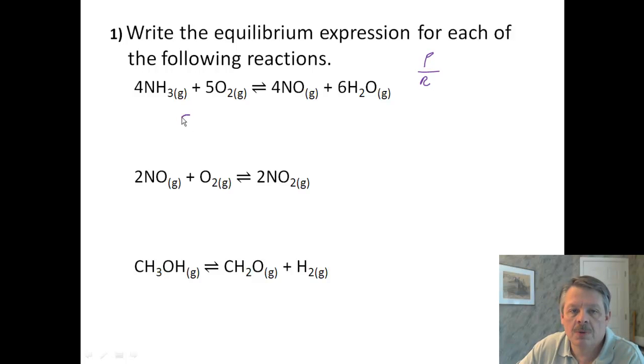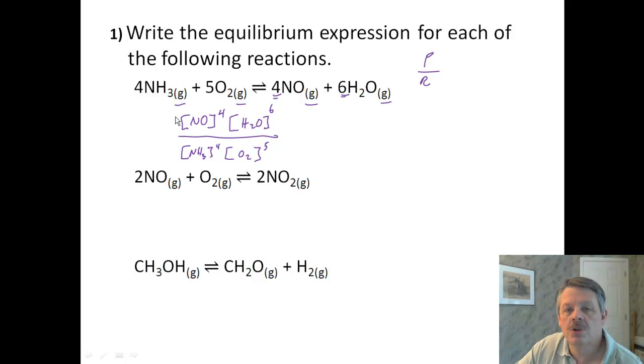So we're going to start here with this one, and we're going to say it is the concentration of NO, and remember that this 4 coefficient means that we raise it to the 4th power. And we take our concentration of water, and we raise it to the 6th power. And we divide it by the concentration of NH3, which is to the 4th power, and concentration of O2, which is to the 5th power. Now it's important, I forgot to mention, these are all gases. If they weren't gases, we couldn't do this. You can only do this for gases and things that are aqueous. So you need to make sure that you remember to check to see what the things are. This is your equilibrium constant, so we're done.